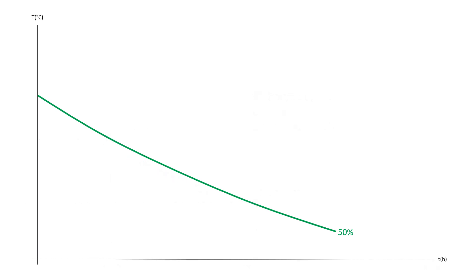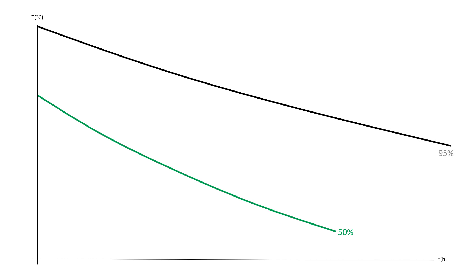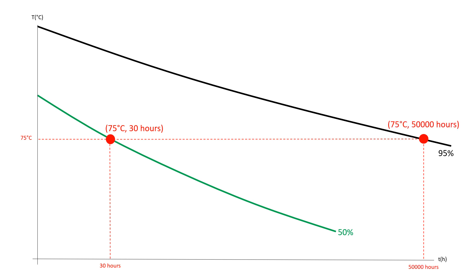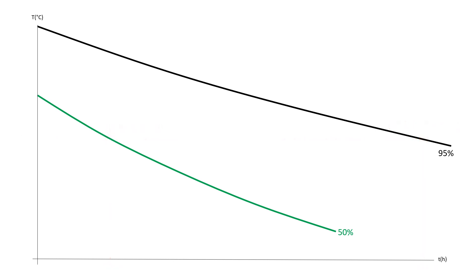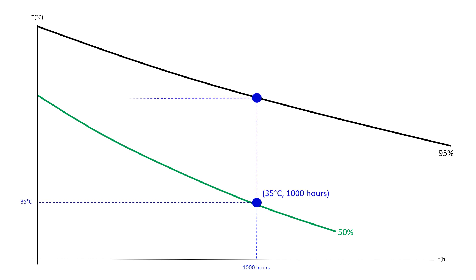The advantages of TTT diagrams can be presented in more detail when time-temperature dependencies are displayed for a few reaction extents — in this example 50 and 95%. One can select the desired temperature or time and read the TTT diagram as follows. For the temperature of 75 degrees Celsius, the reaction extent amounts to 50% after 30 hours and 95% after 50,000 hours. Note the logarithmic scale on the time axis. For a chosen time of 1,000 hours, the decomposition extent amounts to 50% at a temperature of 35 degrees Celsius and 95% at 95 degrees Celsius.